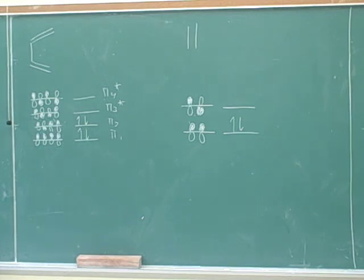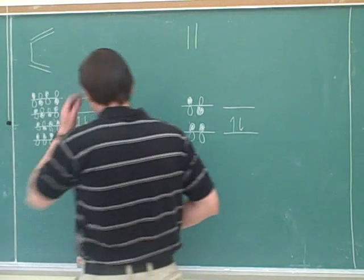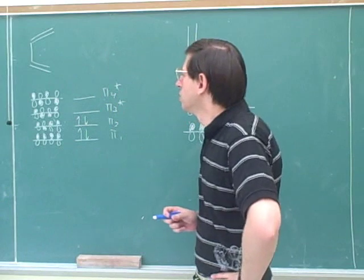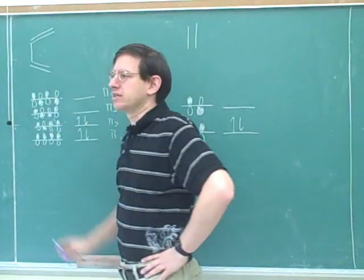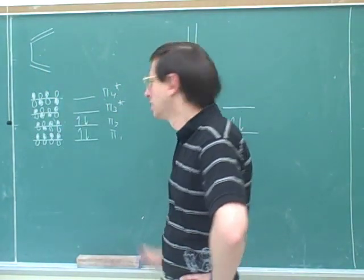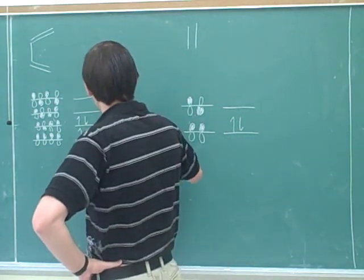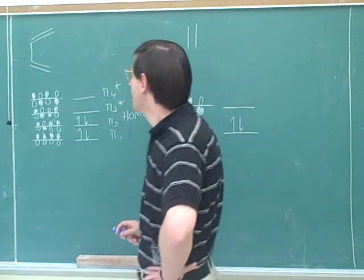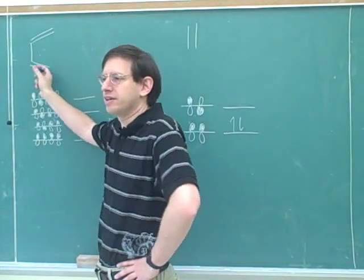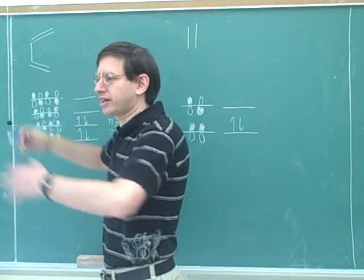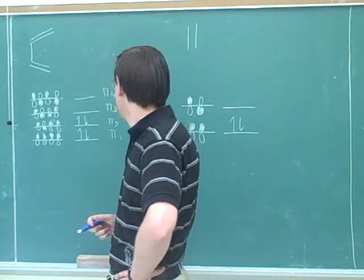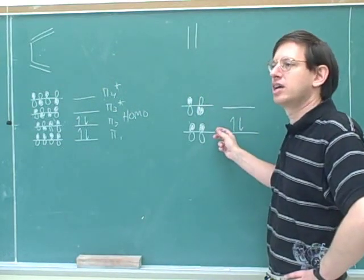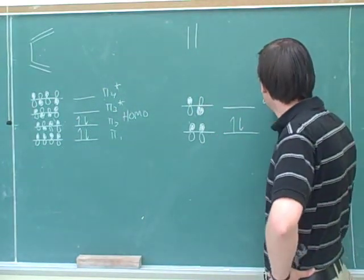Good, and it's good that you also labeled the HOMO and the LUMO for each of these. Although, what do we care about for the diene? Do we care about the diene's HOMO or its LUMO? I'm actually only going to bother labeling the HOMO here, because that's the only one we actually care about in this case. And who do we care about for the dienophile? The LUMO.